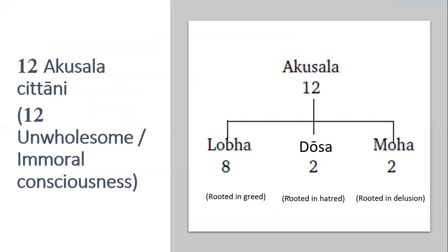In an unwholesome consciousness we would expect to find the unwholesome roots. So the eight lobha mula chitani, the two dosa mula chitani, and the two moha mula chitani will have unwholesome roots present in them.